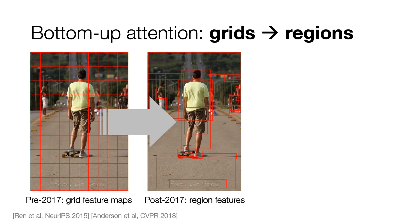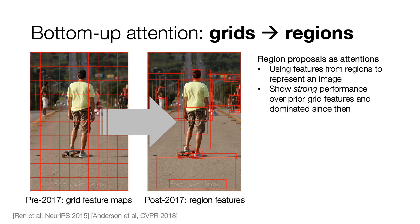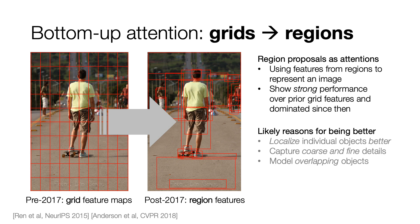So why do we call it revisiting? The story begins in 2017 when it was shown that one can use region features to represent an image for vision and language tasks. Before that, people were using grid features from ImageNet models. But because region features are doing better, they have dominated VQA challenges. But why are they performing so well? Regions do have advantages like localizing individual objects better, but are these the underlying reasons?